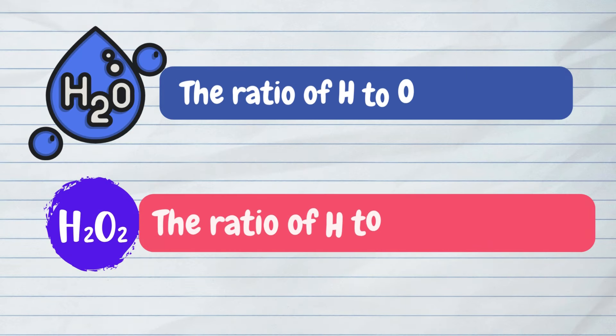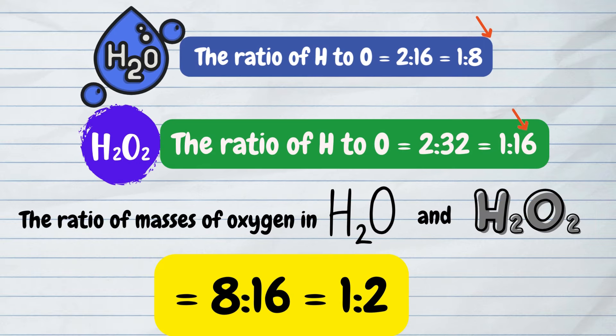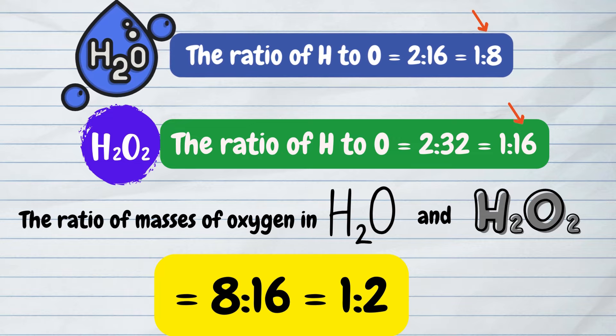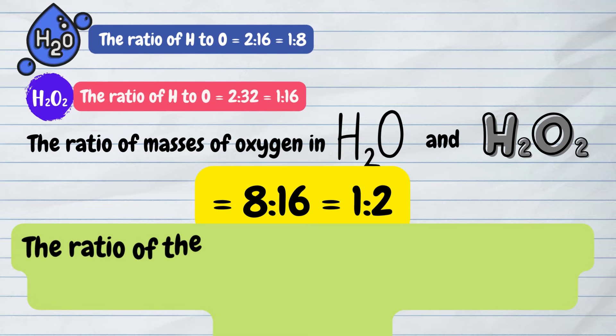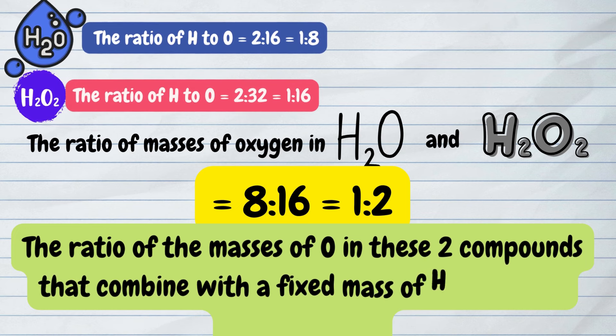Now let's compare the two ratios. The ratio of masses of oxygen in H2O and H2O2 will be equal to 8 to 16, which equals 1 to 2. Thus the ratio of the masses of oxygen in these two compounds that combine with a fixed mass of hydrogen is a simple whole number ratio.